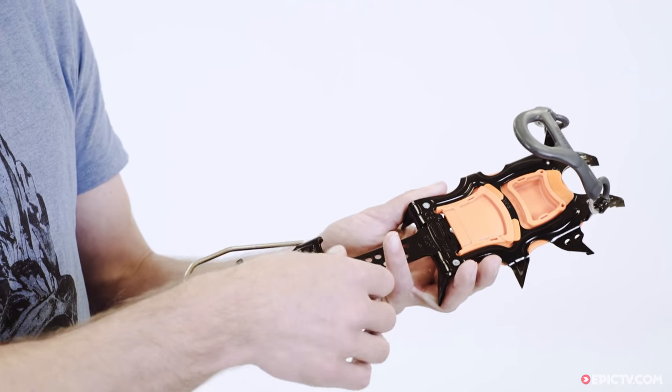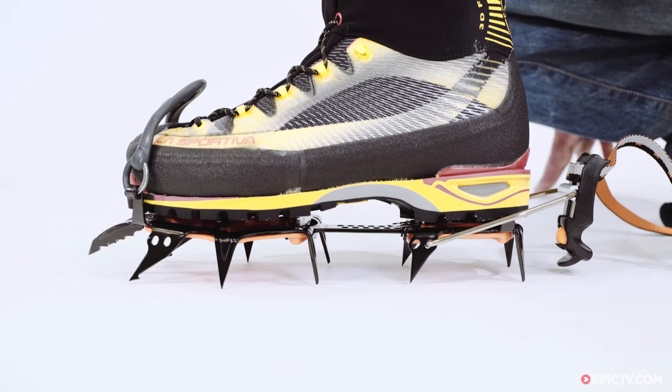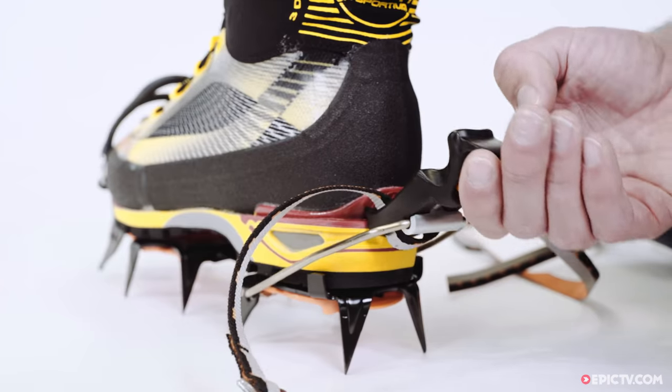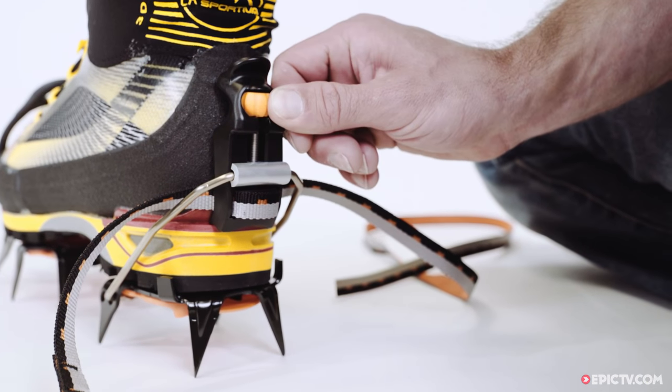The crampons fit most alpine boots and are quickly and easily adjustable. The Sarkin has a lever lock universal binding, which means they can be used with any boot with a rear welt. It's easy to make small adjustments to fit the shape and size of your boot with this wheel on the back.